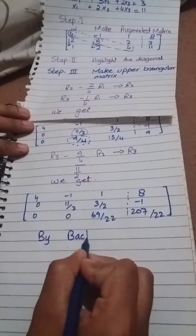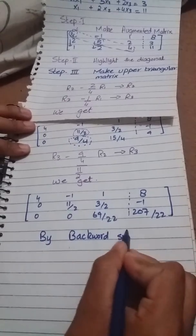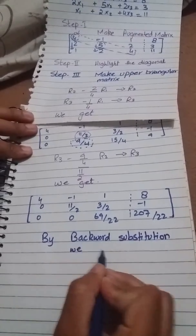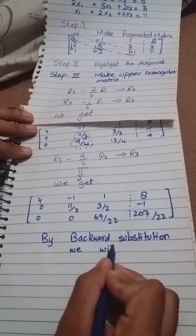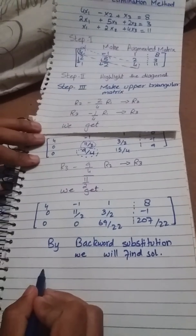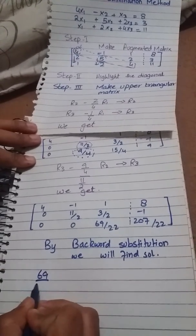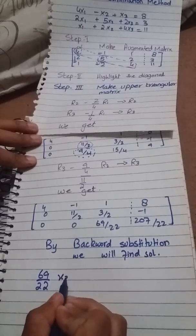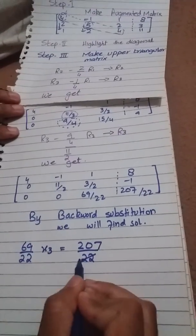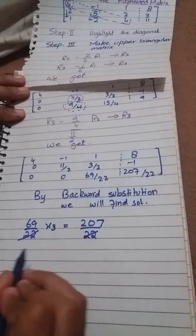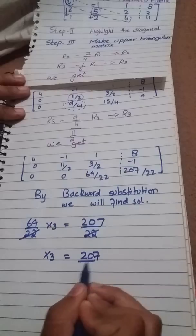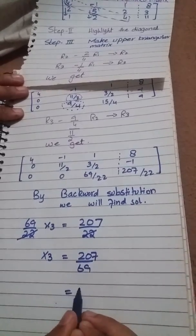Now this becomes the upper triangular matrix. Now by backward substitution we will find solution. 69/22 times X3 = 207/22. 22 both sides cancel. X3 is equal to 207 divided by 69 which is 3.